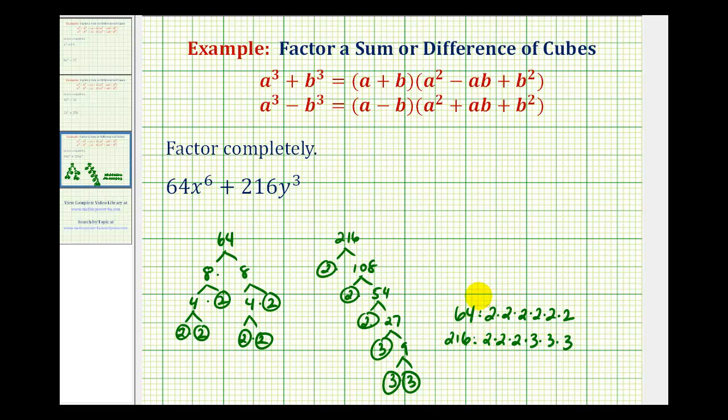And now we can see the common factors are going to be 3 factors of 2. So we'll start by factoring the GCF of 8 out of our binomial. So if we do this, we're going to have 8 times, if we factor out 8 from 64, we're going to be left with 8, and then x^6, plus, if we factor out 8 from 216, we're left with 3 times 3 times 3, or 27, y^3.